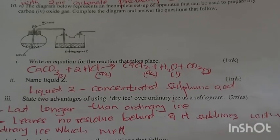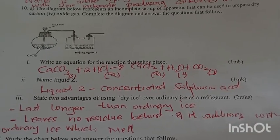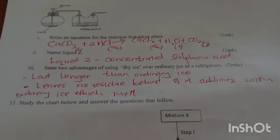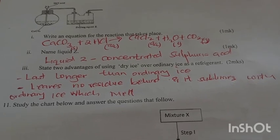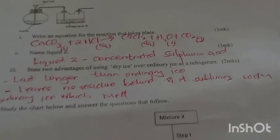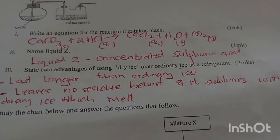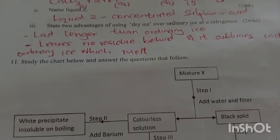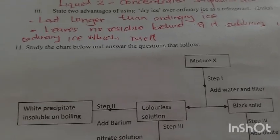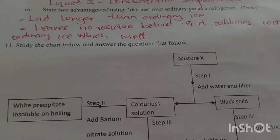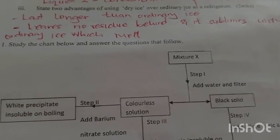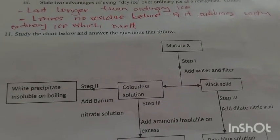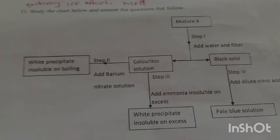The diagram below represents an incomplete setup that can be used to prepare carbon dioxide gas. Write the equation for the reaction. Calcium carbonate plus hydrochloric acid gives calcium chloride plus water and carbon dioxide. Name liquid Z. That is concentrated sulfuric acid, used as a drying agent. You can also use calcium oxide. State two advantages of using dry ice over ordinary ice as a refrigerant. Dry ice lasts longer than ordinary ice, leaves no residue behind, and it sublimes, while ordinary ice melts.